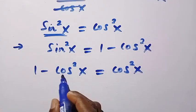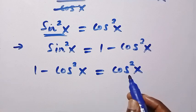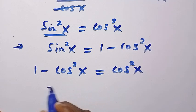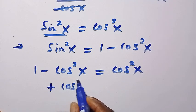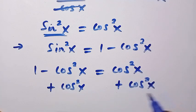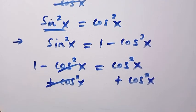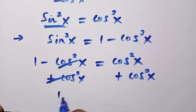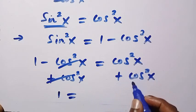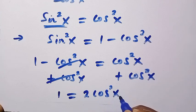And we have cos squared x here, which is negative. Here is cos squared x, which is positive. By adding cos squared x to both sides, this cancels and we have 1 equals cos squared x plus cos squared x. This gives us 2 cos squared x.